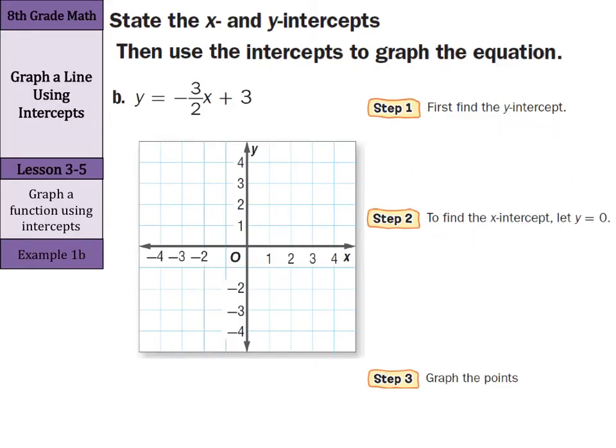Now if we do one more, we have y equals negative 3 halves x plus 3. Again, our first step is going to be to find the y-intercept. Well, I'm already in my slope-intercept form. So my y-intercept is simply the 3.